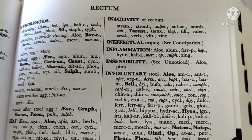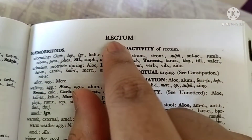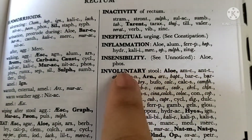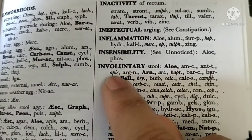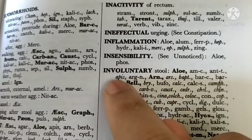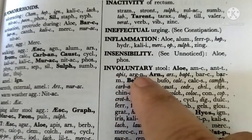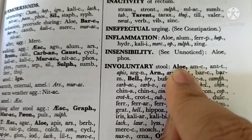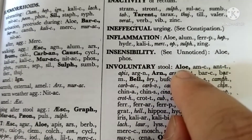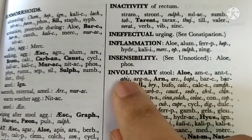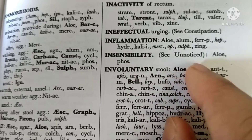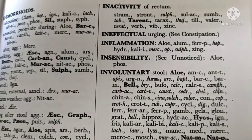Now we have seen how to give markings. Let's look at the repertory sheet. We will start with an example from the rectum chapter. Under 'involuntary stools' — this is the general rubric — the remedies listed are: Aloes (in bold), Apis Mellifica (in italic), and Argentum Nitricum (in roman). So Aloes Socotrina is a three-mark remedy because it is in bold letters — it is the main remedy for involuntary stools. Apis is the two-mark remedy, and Argentum Nitricum is the one-mark remedy.